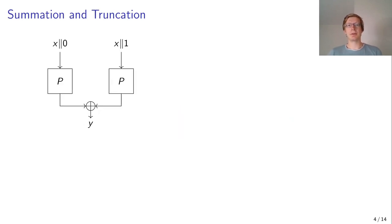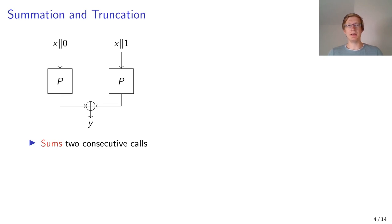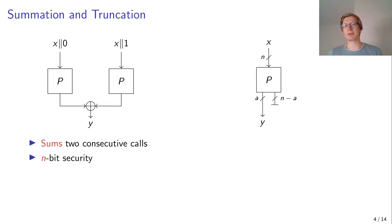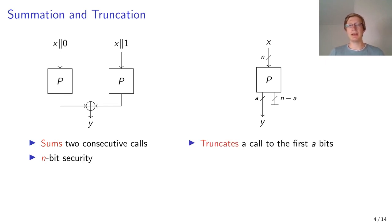When we first look at summation, the construction simply takes two calls of a PRP and sums them together using an XOR. This construction achieves full N-bit security. We also have the truncation construction, which truncates the output and keeps the first A-bits of the output, discarding the other N-A bits.